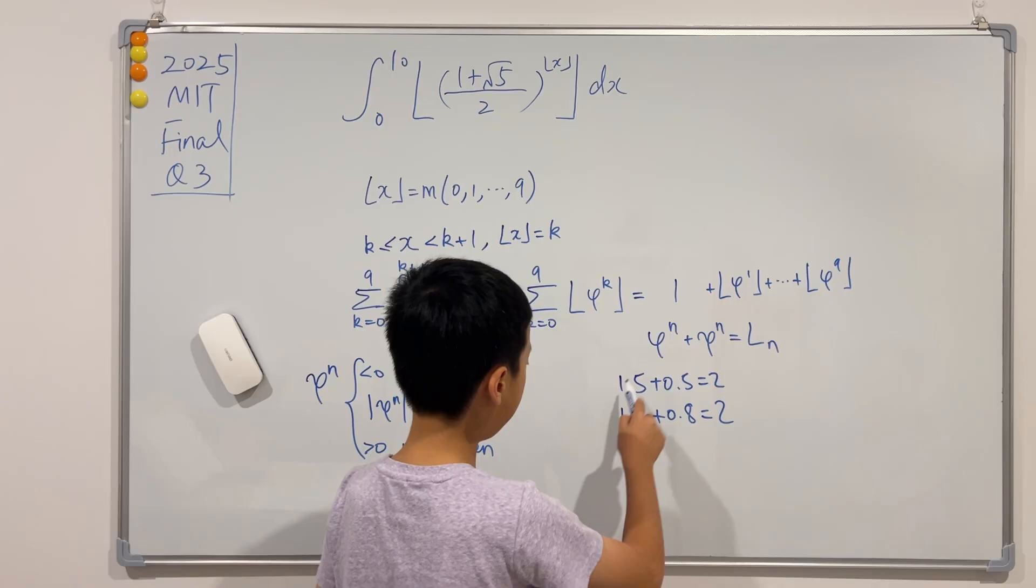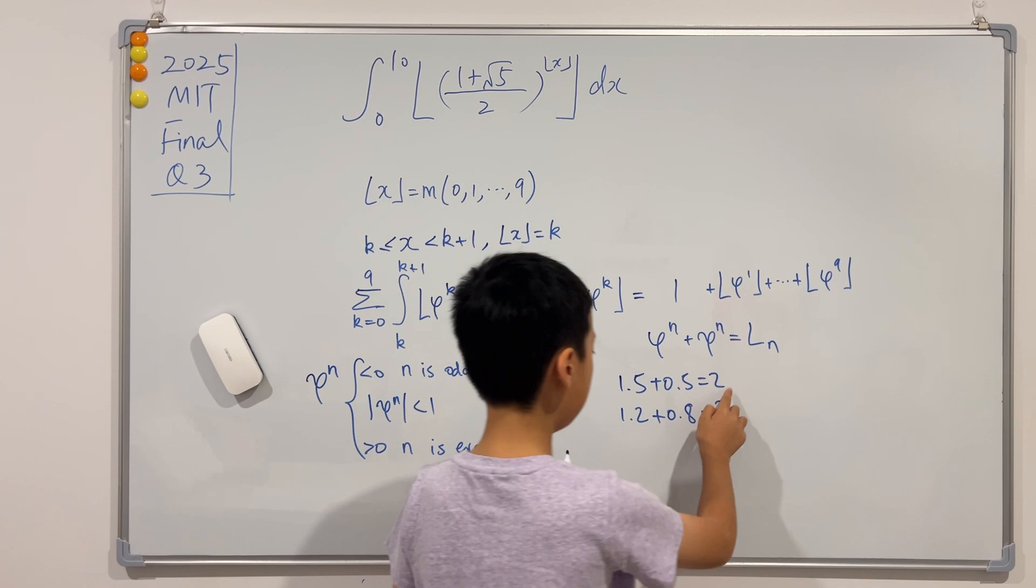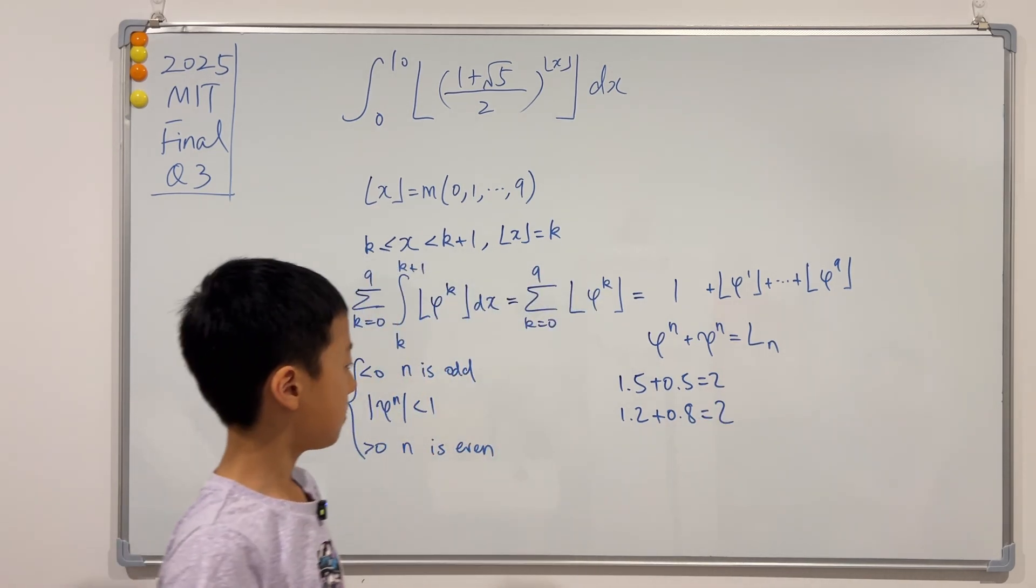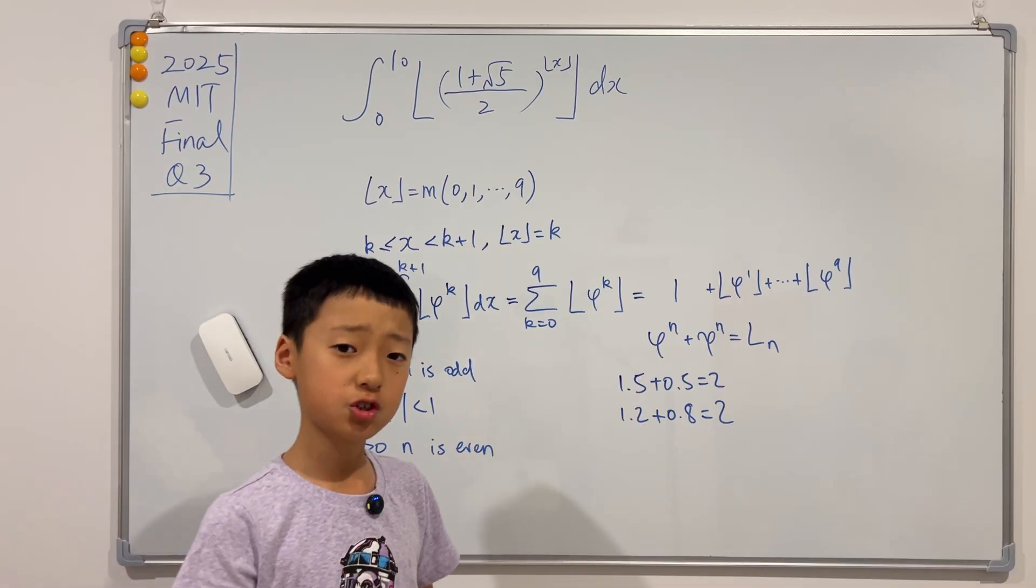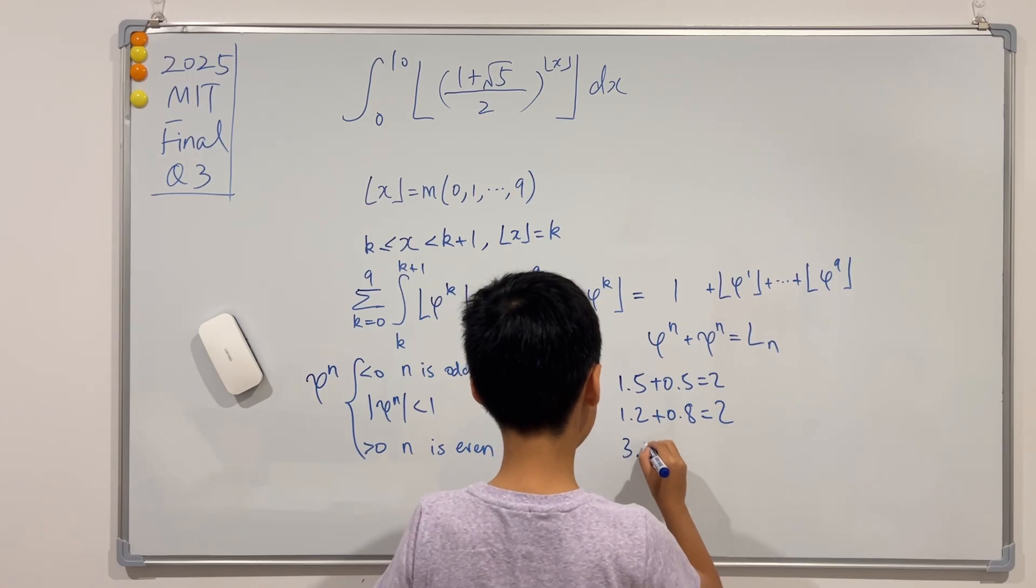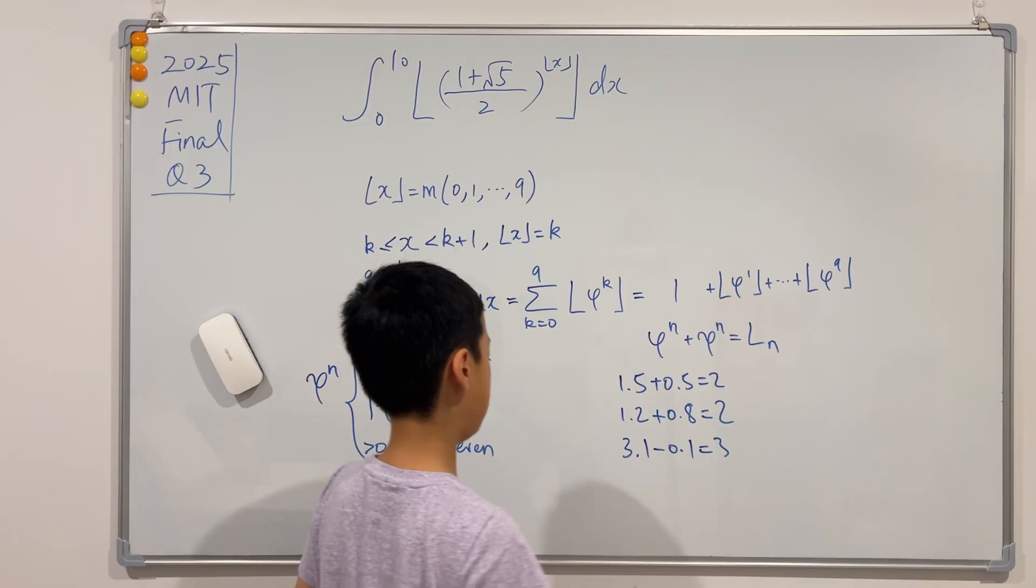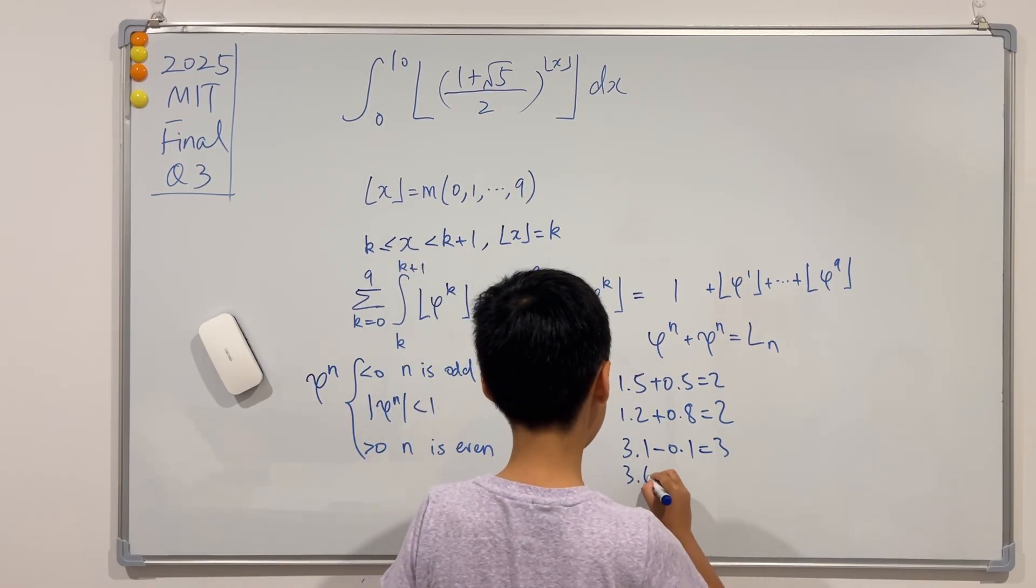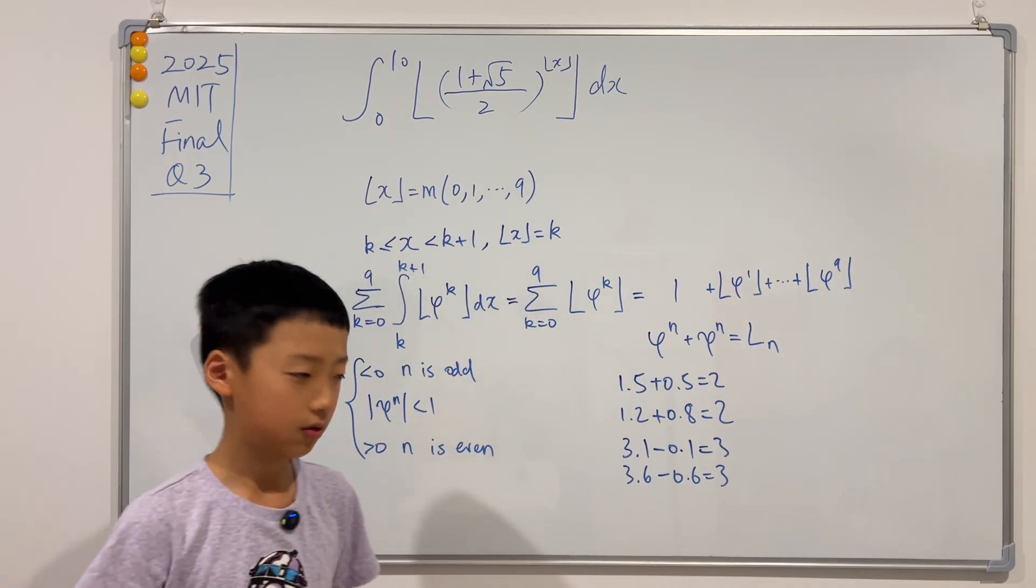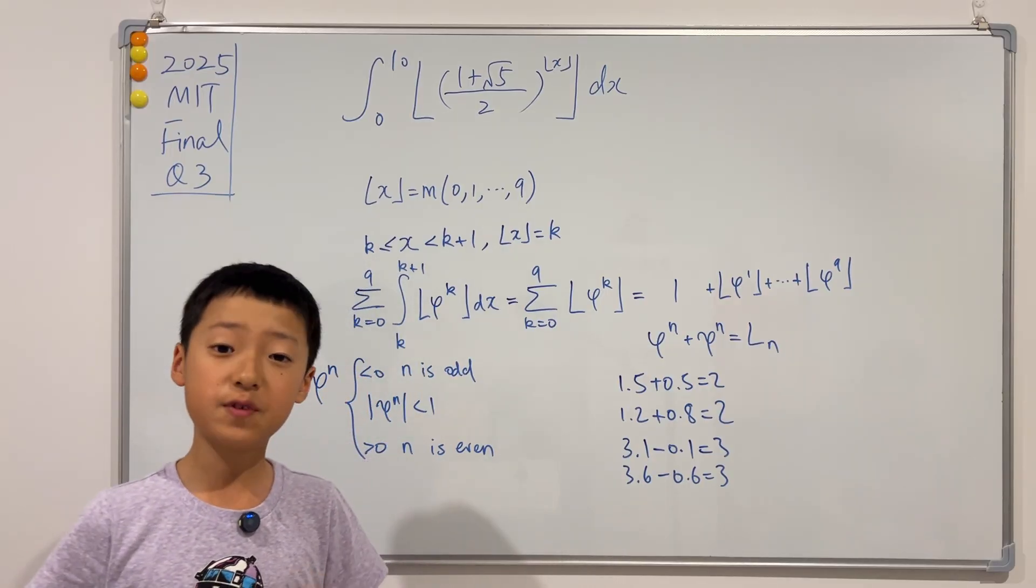It is always the Lucas number minus 1. And you can try this on your own. But what about for the subtraction cases? Well, there can be 3.1 - 0.1, this is 3. Maybe 3.6 - 0.6 is 3. Now for the subtraction cases, we see that the floor of my made-up phi is equal to the Lucas number.